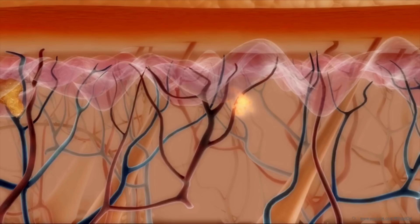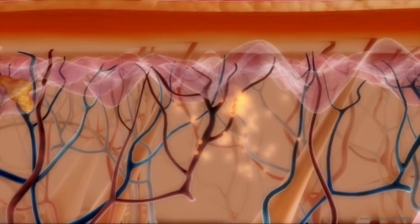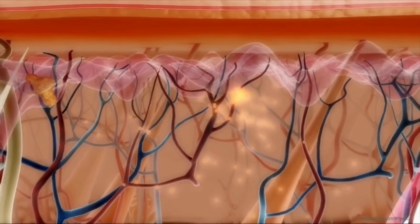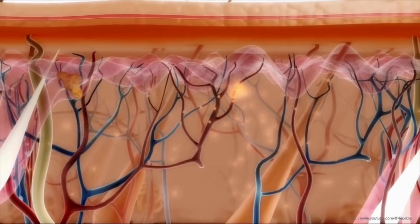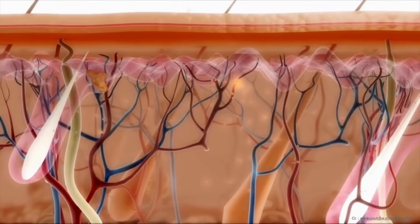The injected dermal sheath cup cells can migrate to damaged and dormant hair follicles to rejuvenate and further stimulate the growth of hair fibers.